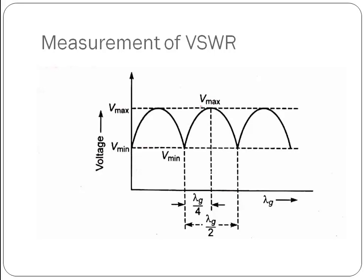This is the simple diagram of VSWR. This pattern is set up by the reflected wave and incident wave. Here we get two voltages: one is known as Vmax and the second is known as Vmin. Vmax is the voltage which is maximum at a certain frequency or wavelength. Similarly, Vmin is the voltage which offers the minimum value at a particular wavelength or frequency. The distance between a voltage minimum and a voltage maximum is lambda G by 4, and the distance between two voltage minima is lambda G by 2.